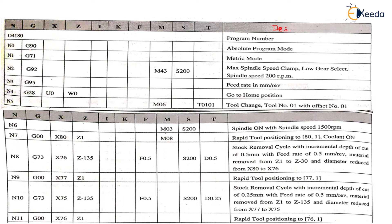So let's start: G90 is absolute mode, G71 is metric mode, G92 M63 S200 — that is the maximum spindle speed, low gear, fillet. Then G95 is feed rate in mm per revolution. G28 U0, W0 — go to home position. M06 T0101 — that is tool change. M03 S200 — that is spindle on with spindle speed 1500 RPM. Up to this part is considered as the header of the file.